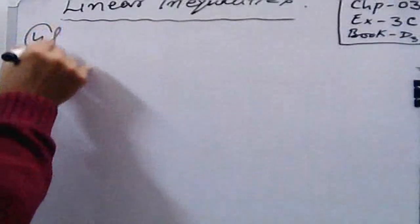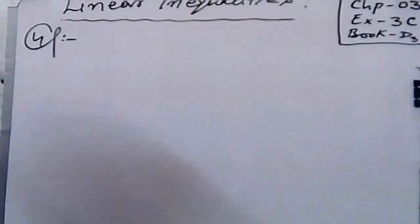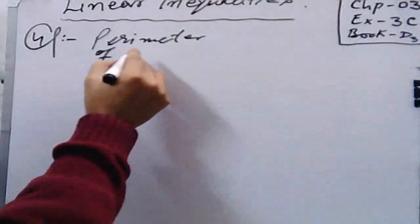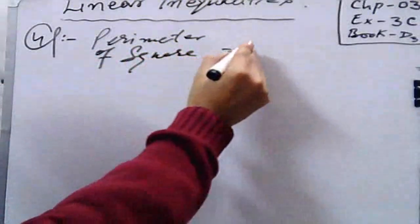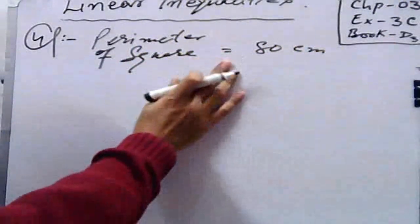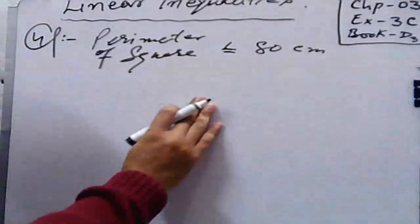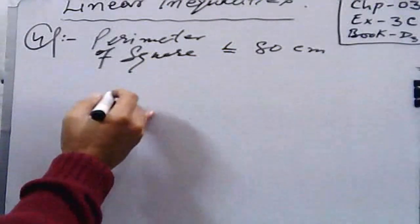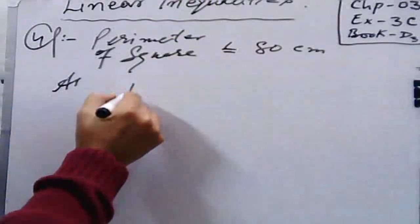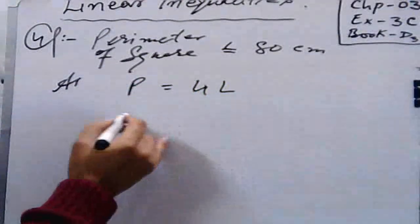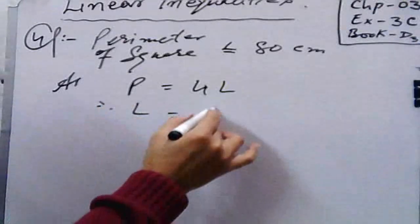Question number 4. Read the statement: The perimeter of a square is not more than 80 centimeters. What is the largest possible area of the square? Perimeter of a square is less than or equal to 80 centimeters. We are familiar that perimeter P is equal to 4L. Therefore, L is equal to perimeter divided by 4.